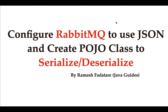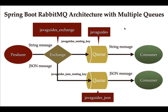Welcome back. In this lecture we'll see how to configure RabbitMQ to use a JSON message for communication between producer and consumer. We are also going to create one POJO class to serialize and deserialize. Looking at the architecture, in this lecture we are going to create one more queue called 'java_guides_json' to store JSON messages, and we are going to bind this queue with the exchange using the routing key called 'java_guides_json_routing_key'.